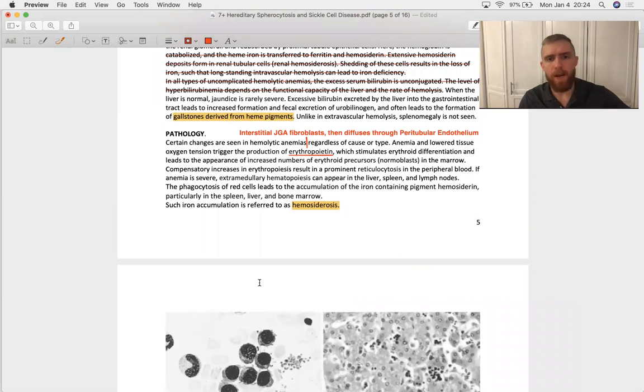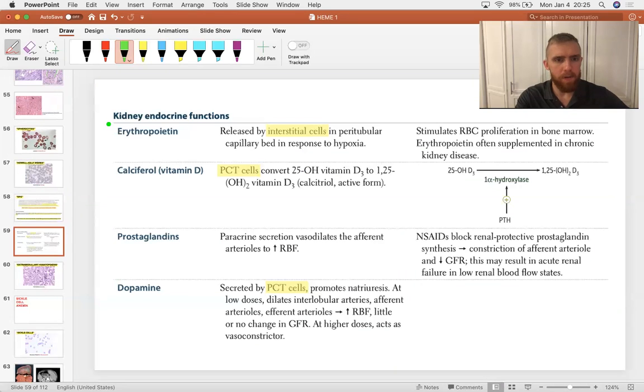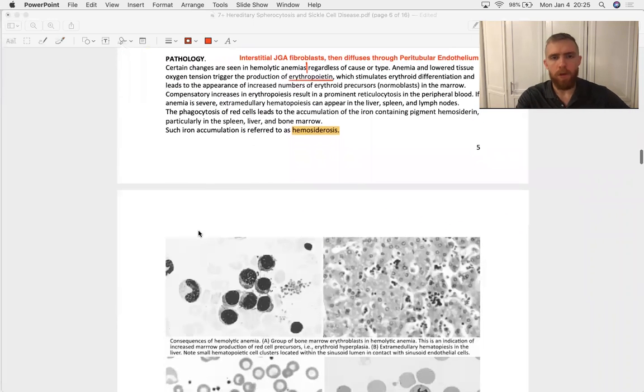Erythropoietin always goes up in anemia unless you're in chronic kidney disease. And the cells that secrete erythropoietin are interstitial fibroblasts of the juxtaglomerular apparatus. Not endothelial cells of any part of the kidney. And I bring that up because that's in First Aid actually in the segment of kidney endocrine functions. They want you to know the types of cells that make these different hormones. So, recognize for EPO it is interstitial cells.